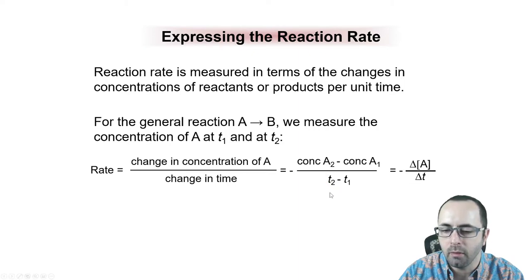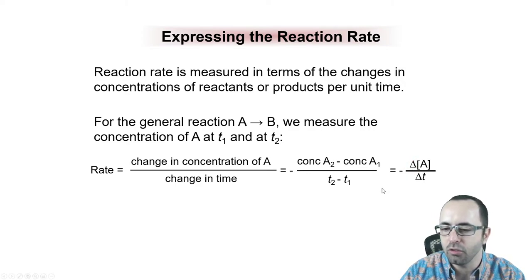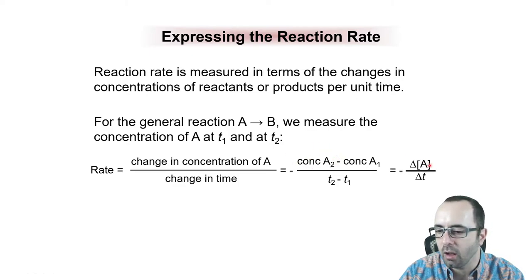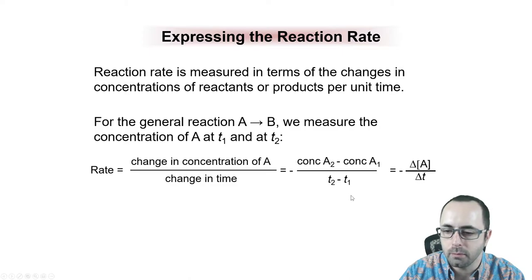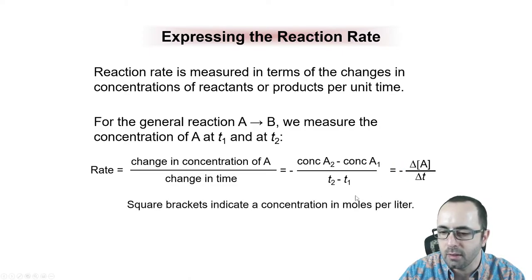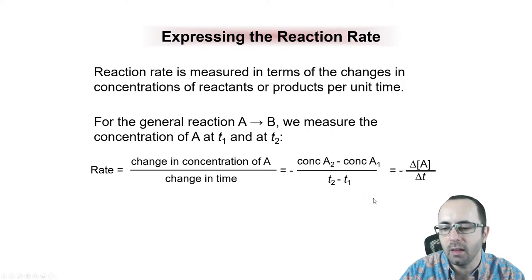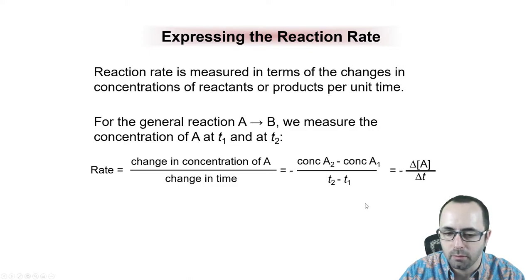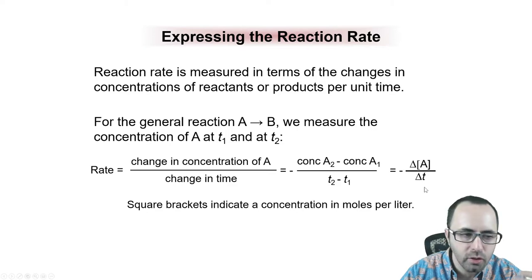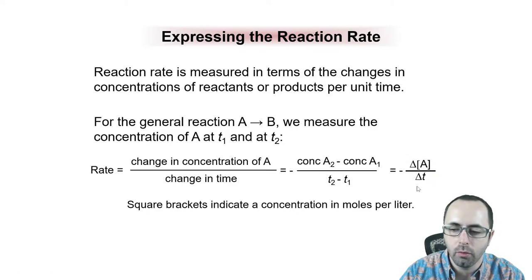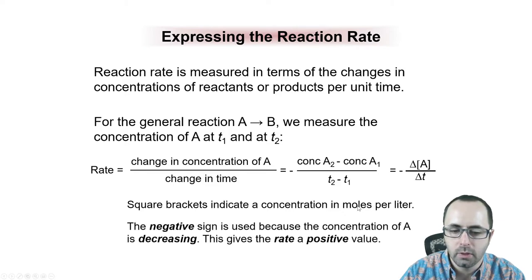This is divided by the change in time — the later time minus the initial time. The delta symbol means 'change in,' so the change in concentration is the final concentration minus the initial concentration, and change in time is the final time minus the initial time. A negative sign is placed in front because for reactants the concentration is decreasing, so putting a negative turns the rate into a positive value. Square brackets indicate concentration in molarity.